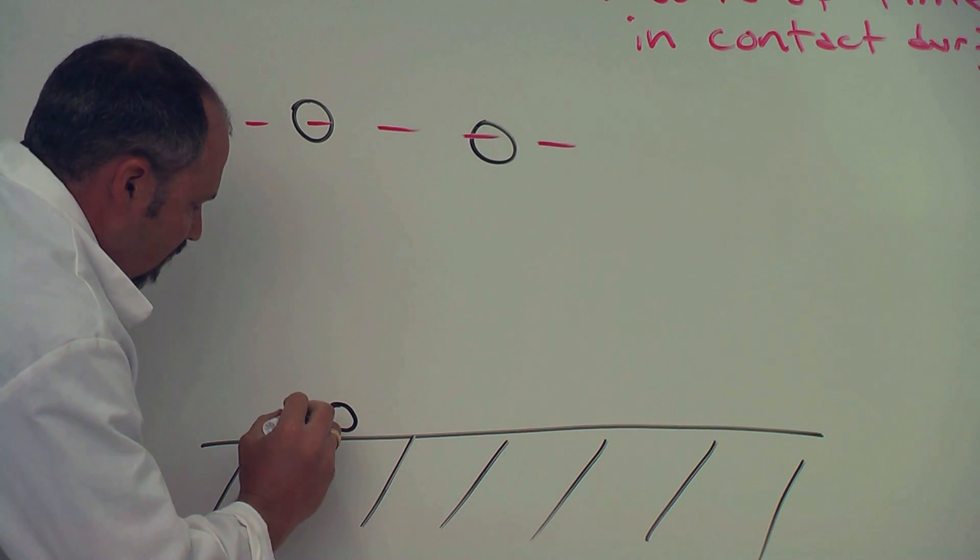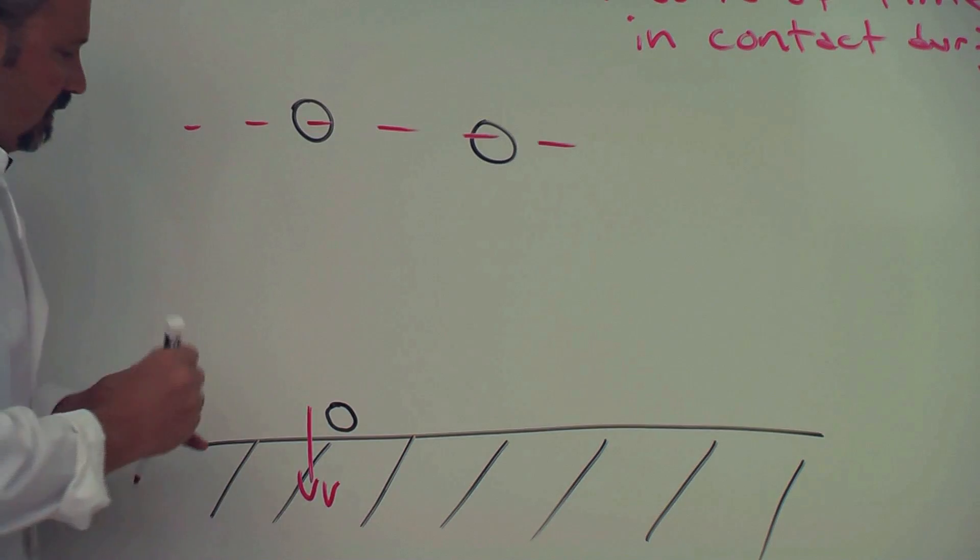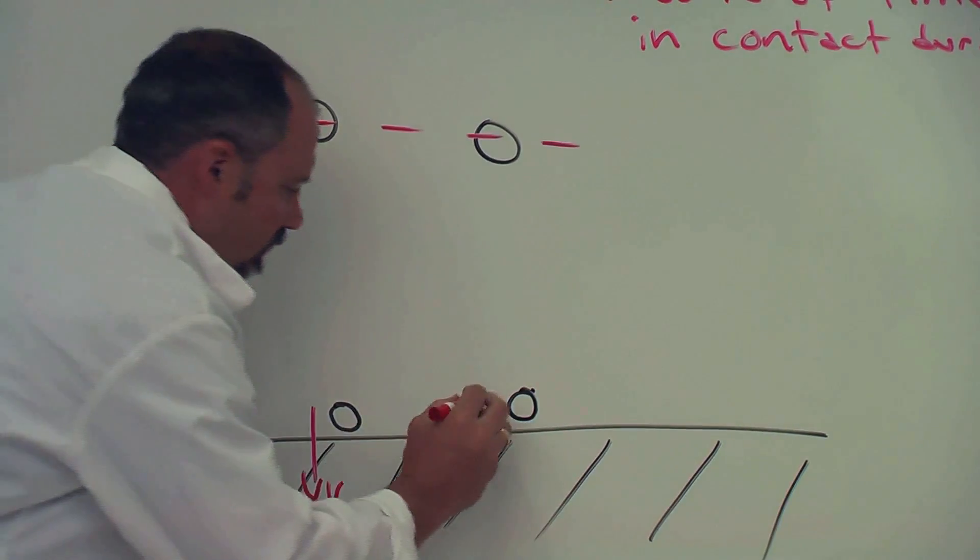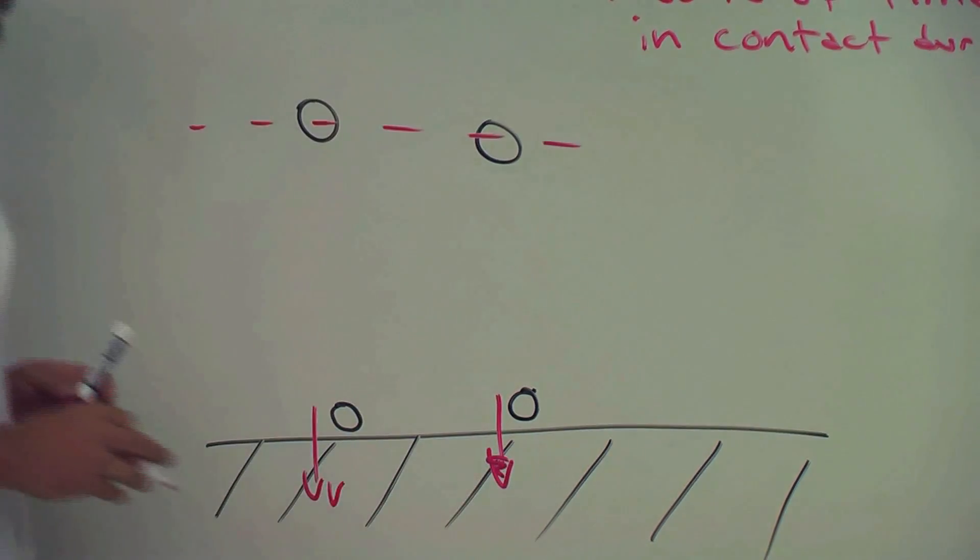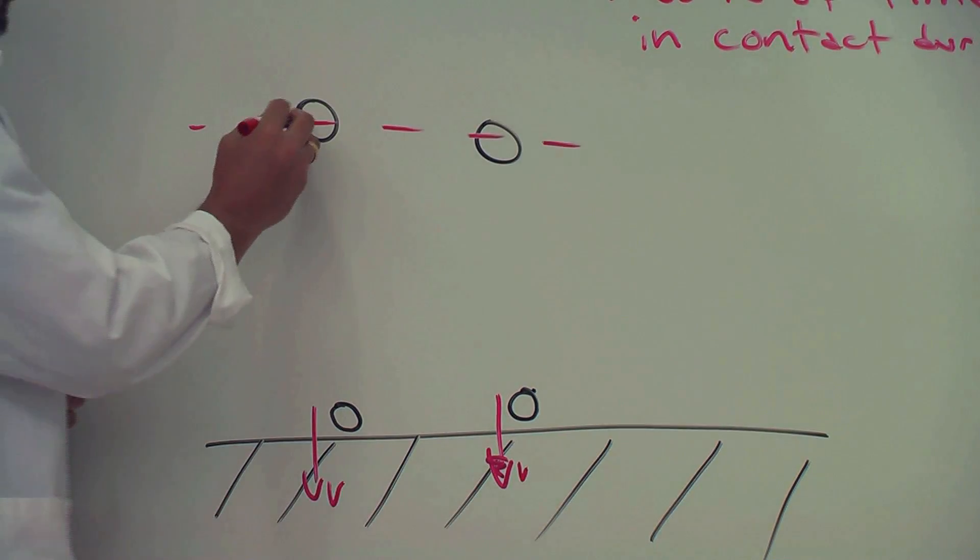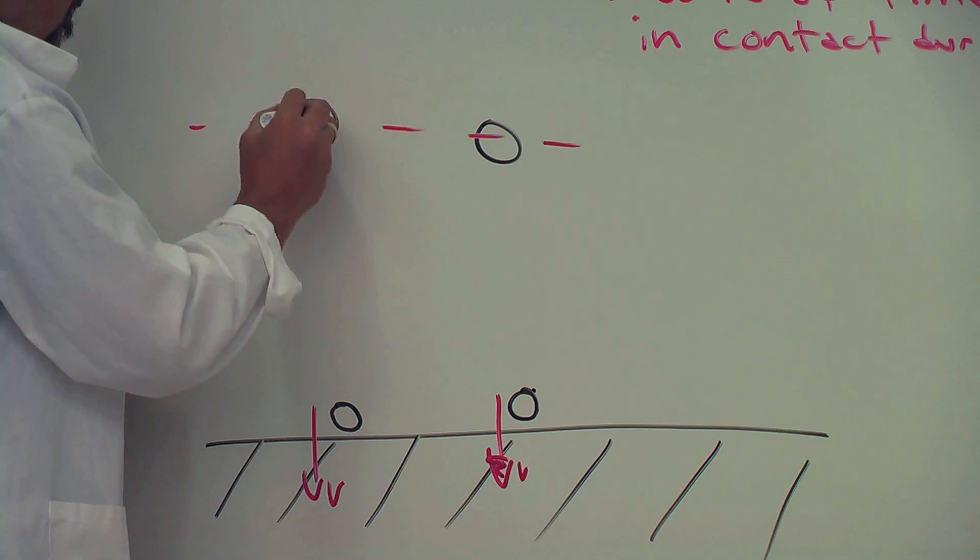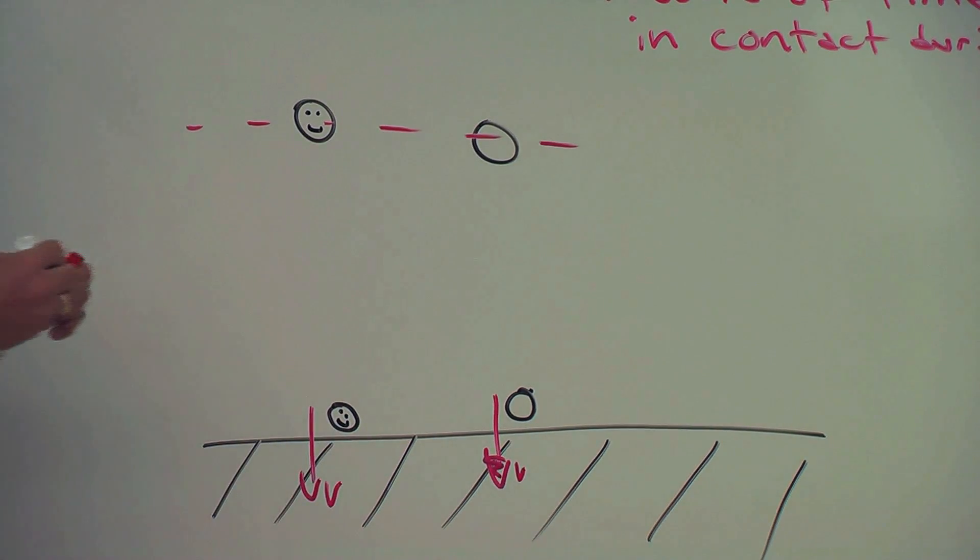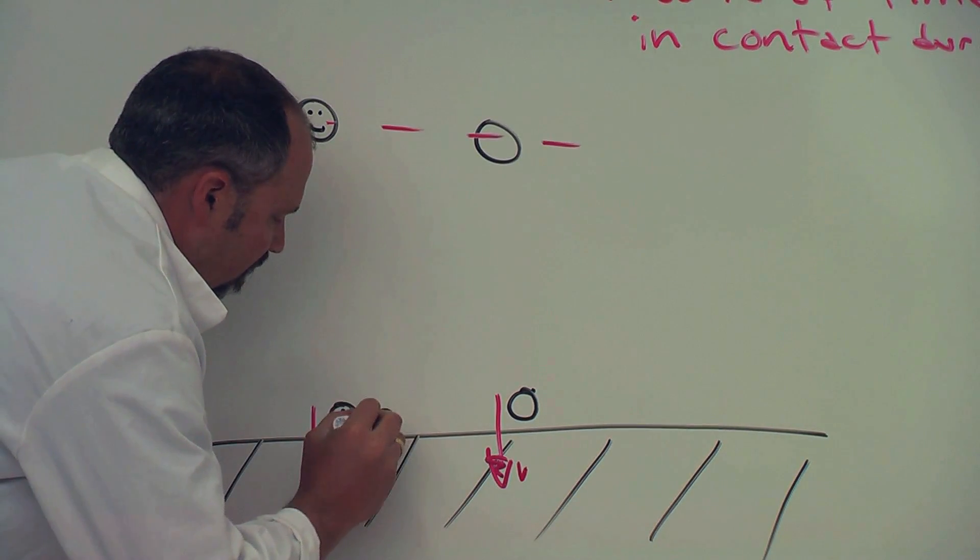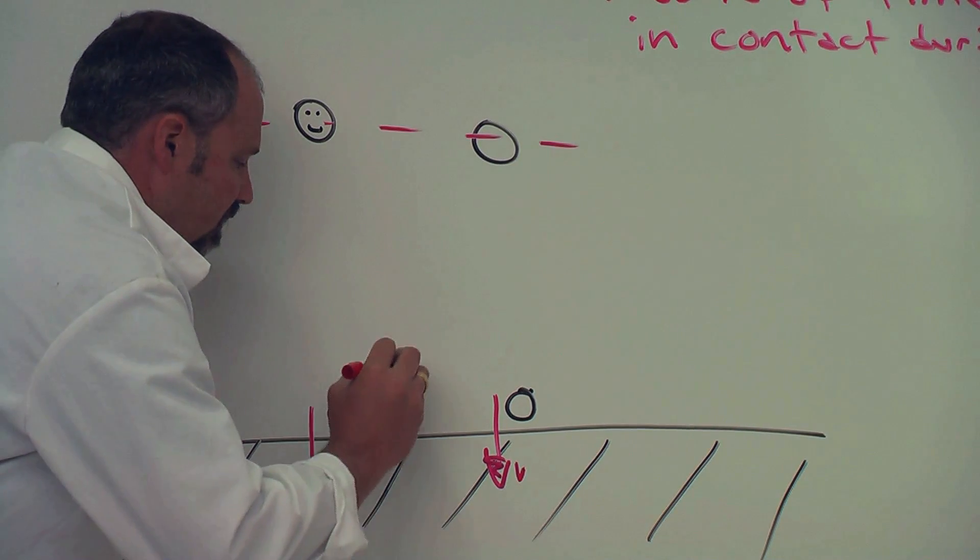The instant before it hits the table has some speed v. And same thing for this guy. The instant before it hits the table has some speed v. Well for the happy ball, it then immediately comes back up with the same speed v. It went back up to just about the same height.